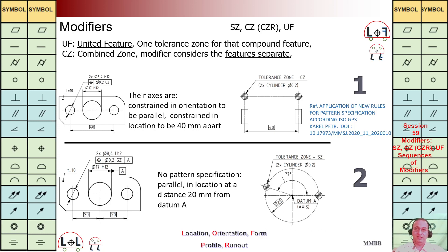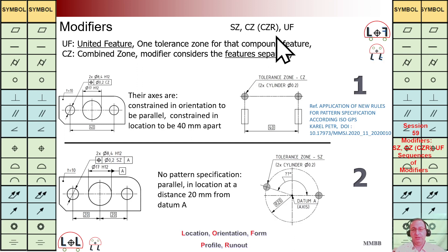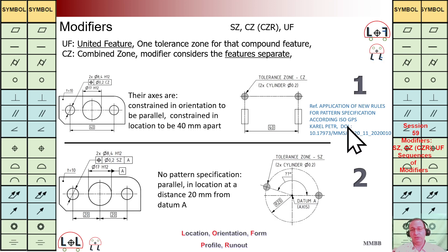Hello everybody, I'm glad to be here. Today is the last session regarding GD&T. In this last session I'm going to talk about these modifiers: SZ, CZ, and UF. I have used this reference — if you Google this DOI you can easily find it. It is a good reference for this topic.